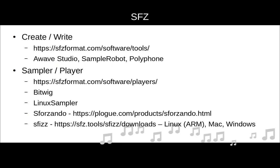Moving on to SFZ tools — a bit newer, so fewer tools, but RWave, Sample Robot, and Polyphone all support these formats. For both formats, there are lists on the SFZ format website where you can find many more tools and players. Bitwig Studio's sampler can read SFZ. Linux Sampler also supports it. Sforzando is a plugin available for quite some time. Finally, SFIZZ is a new open-source plugin with publicly available source code, available for Linux including ARM — interesting for Raspberry Pi users — and also for macOS and Windows.